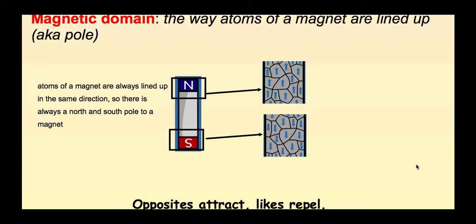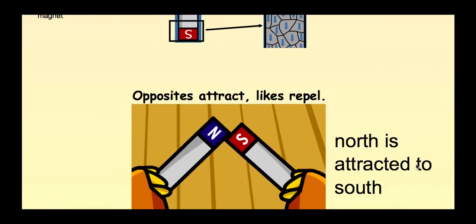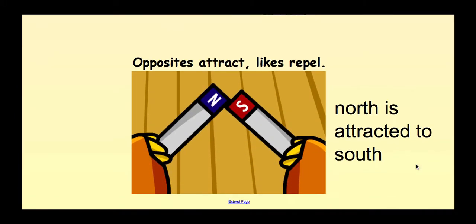And it's these poles that bring us to the next point of opposites attracting, likes repelling, just like we talked about with electricity. Magnets also attract and repel. So in this example, the north would be attracted to the south because they're opposites. South and south would repel. North and north would repel. So opposites attract in magnets as well.